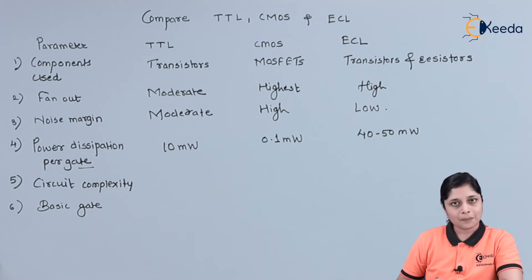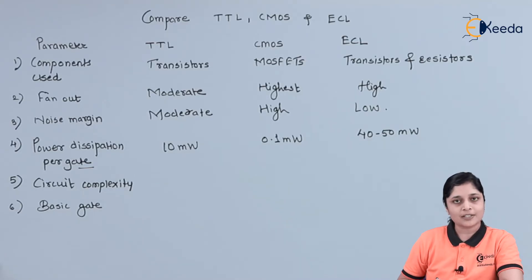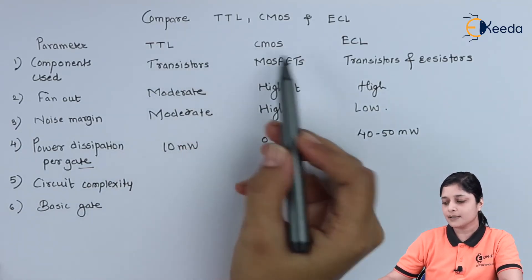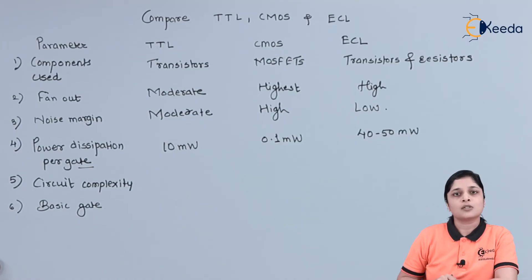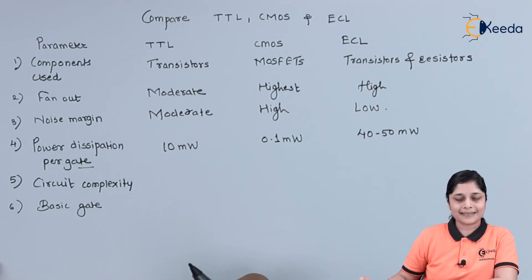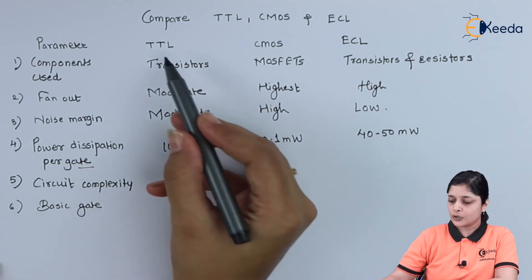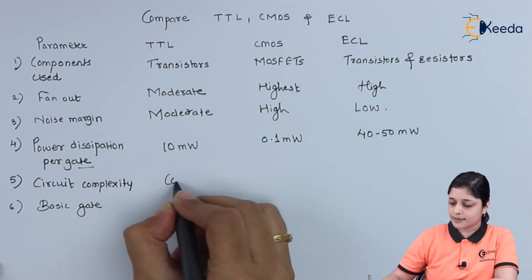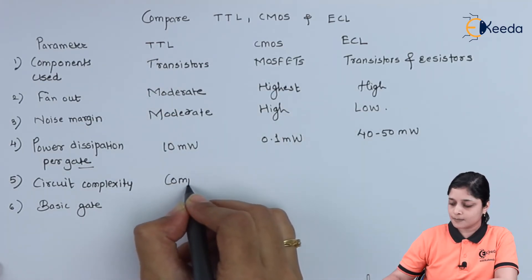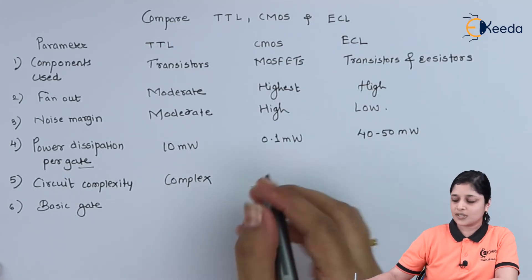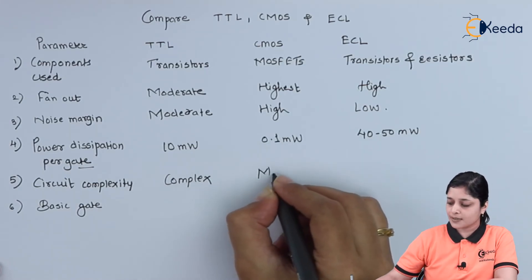Circuit complexity is the next factor. For TTL it is complex, and for CMOS it is moderately complex.